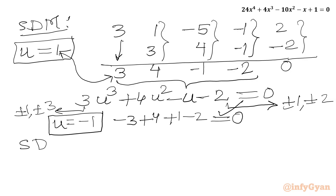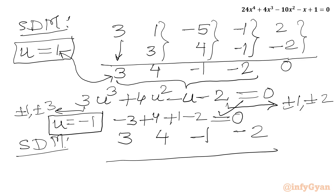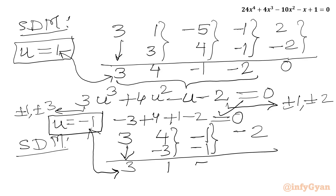Again we use synthetic division on the cubic 3u³ plus 4u² minus u minus 2 with base solution u equal to minus 1. Coefficients: 3, 4, minus 1, minus 2. Leading coefficient 3 stays; minus 1 times 3 is minus 3, addition gives 1; minus 1 times 1 is minus 1, addition gives minus 2; minus 1 times minus 2 is plus 2, addition gives 0. So the quadratic equation in u is 3u² plus u minus 2 equal to 0.